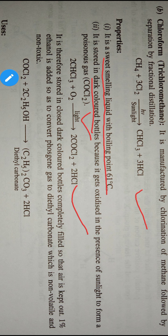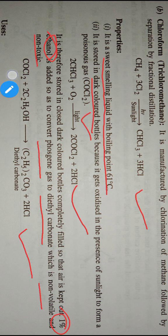If we add 1% ethanol to the phosgene gas, COCl2, it will form diethyl carbonate, which is non-volatile and non-toxic. The phosgene gas is poisonous. The reaction is COCl2 plus C2H5OH, 1% ethanol, gives diethyl carbonate plus HCl.